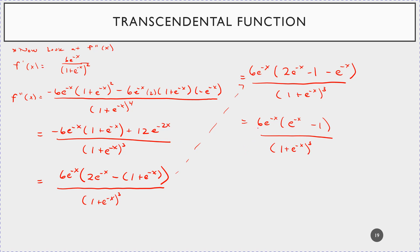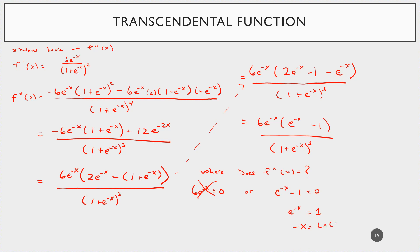Now find where f''(x) = 0 by setting the numerator equal to zero. Either 6e^(-x) = 0 (impossible), or e^(-x) - 1 = 0. Adding 1 and taking the natural log of both sides: -x = ln(1) = 0, so x = 0.